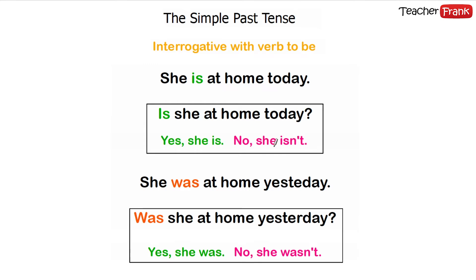For the simple past form, it is the same thing. We change "is" to the simple past form "was". So "She was at home yesterday." We invert: "Was she at home yesterday?" — "Yes, she was" or "No, she wasn't."